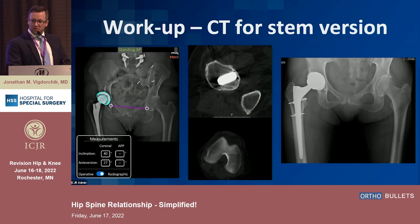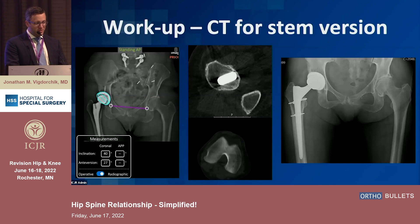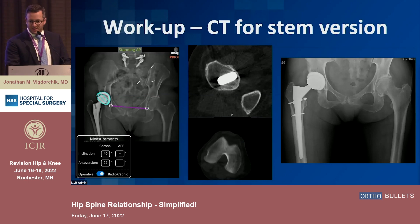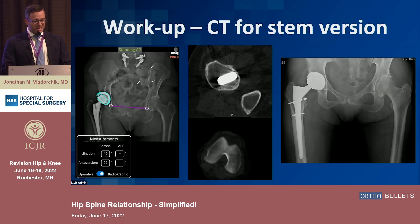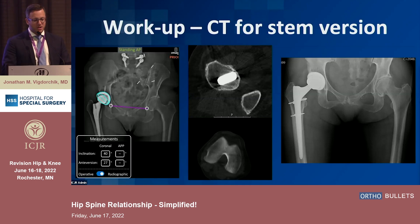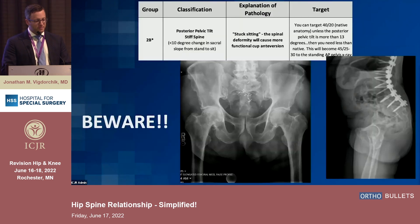CT scan is very important for the workup of recurrent dislocators. Here's a rare case where the cup is actually perfect — 40 degrees of inclination, 27 degrees of anteversion, right within the safe zone. But the stem is at about 55 degrees of anteversion. Knowing that ahead of time helps you figure out why the hip is dislocating — go ahead and revise the stem, restore normal version, increase offset, and go to a bigger head.